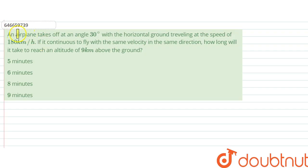Hello, we are given with a question and the question says an airplane takes off at an angle 30 degrees with the horizontal ground, traveling at a speed of 180 kilometers per hour. If it continues to fly with the same velocity in the same direction, how long will it take to reach an altitude of 9 kilometers above the ground?